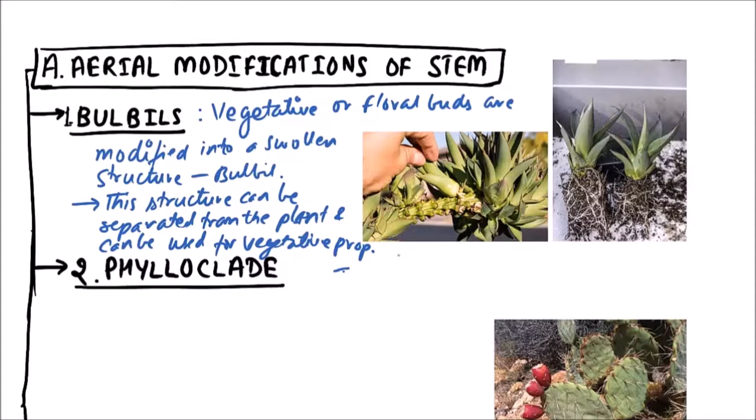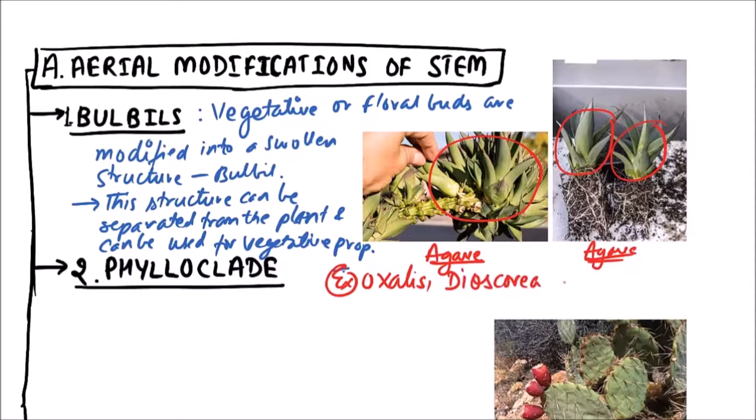The examples are Agave species. This is also of Agave. These are a group of bulbils and one bulbil is separated out here and another one is here. So these can be used for vegetative propagation. Other examples of this category are Oxalis and Dioscorea which is also known as yam plant.